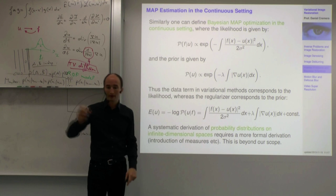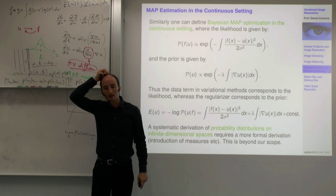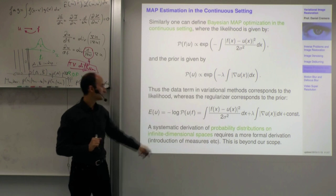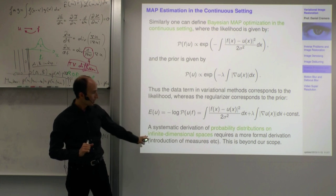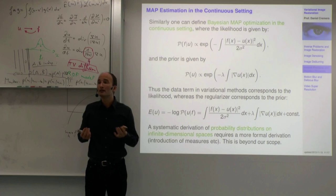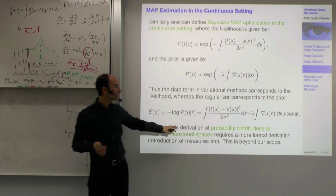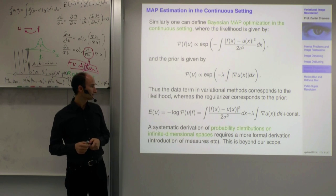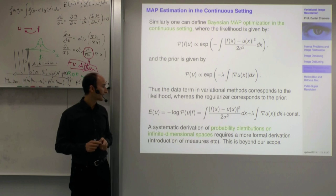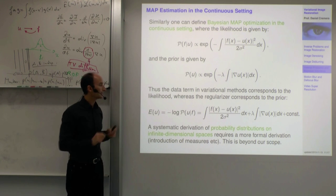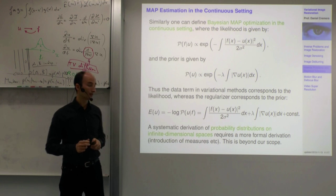This is an extension of the Bayesian framework to a continuous setting. From a mathematical point of view, it's actually a little more complicated — you're talking about probability distributions on infinite-dimensional spaces, and there are open challenges in extending probability theory to infinite dimensions. But for this class, I decided not to go into those technicalities — in practice this works quite well, even if certain technical difficulties exist.